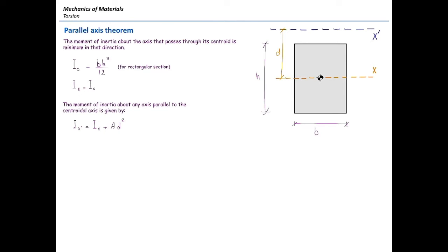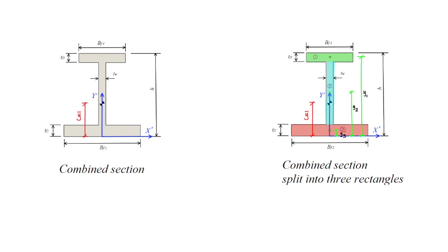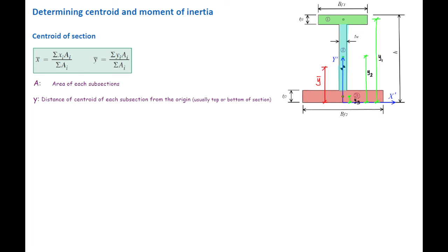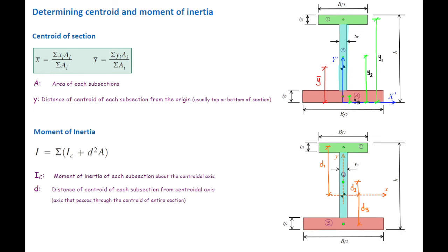Now let's apply this to a combined section split into three parts — green, blue, and red. We first determine the centroid. Then, using the parallel axis theorem, the total moment of inertia equals the sum of each subsection's moment of inertia about its own centroid (I sub C) plus its area multiplied by D squared, where D is the distance from each subsection's centroid to the centroid of the entire section.